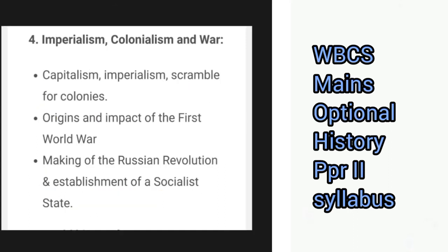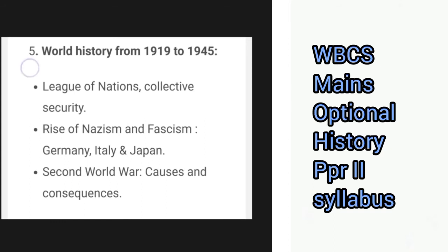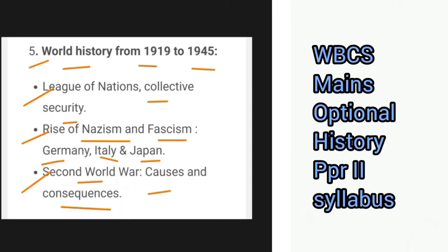A section on imperialism, colonialism and war covers capitalism, imperialism, scramble for colonies, then the origins and impact of the First World War, and the making of the Russian Revolution and establishment of a socialist state. Next is the section based on world history from 1919 to 1945: League of Nations, collective security, rise of Nazism and fascism in Germany, Italy and Japan, the Second World War, its causes and consequences.